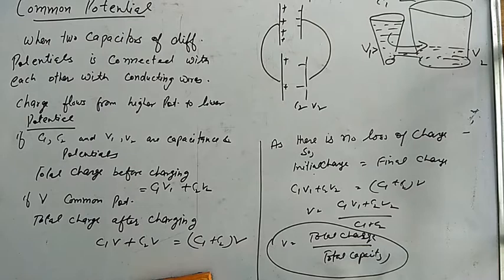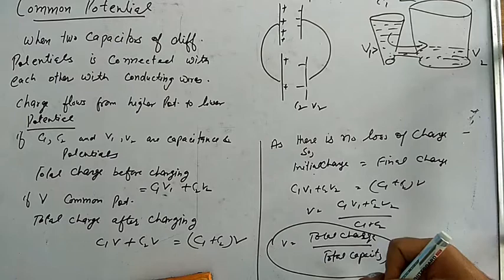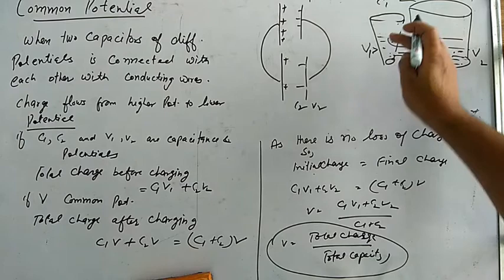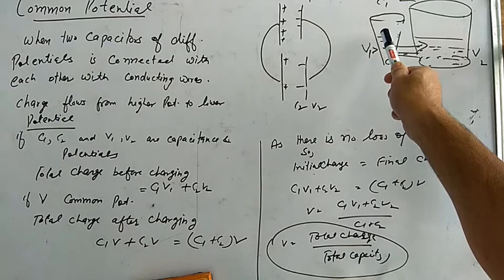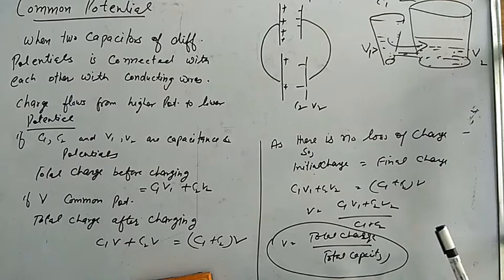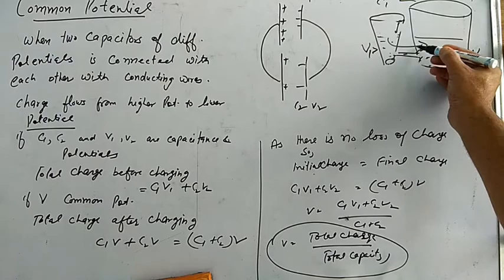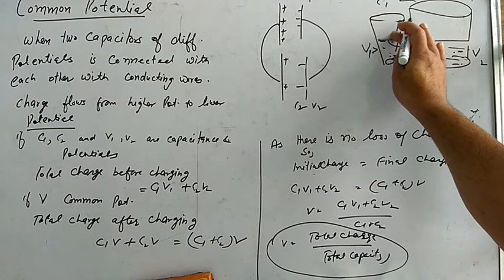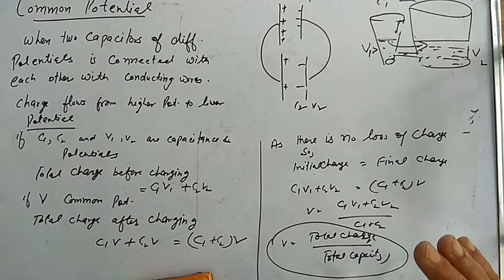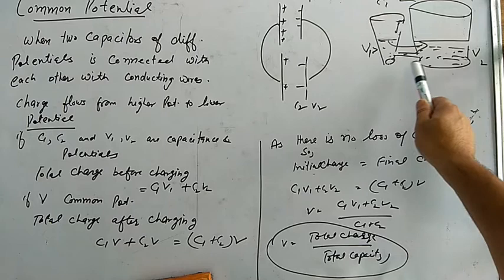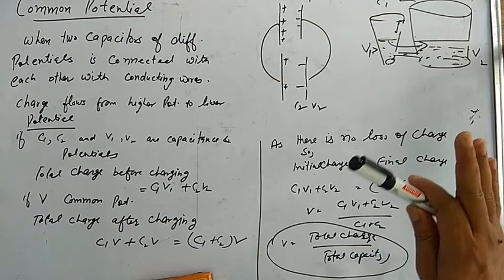Charge flows from higher potential to lower potential. It keeps flowing until both have the same potential — not until one is empty, but until both levels are equal. The amount of water lost by one equals the amount gained by the other, but the change in height depends on the capacity of each bucket. So charge flows from high to low potential until both reach the same common potential.